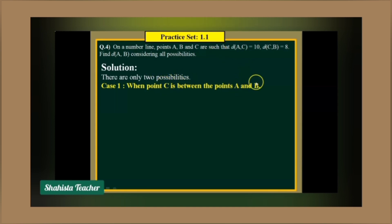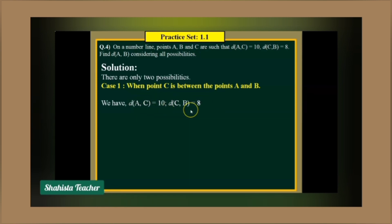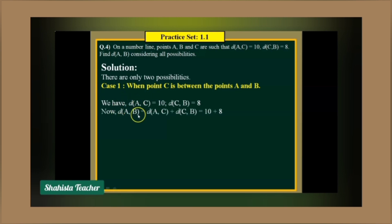For Case 1, when point C is between points A and B, we write the given values: distance of AC is 10 and distance of CB is 8. Distance of AB is equal to distance of AC plus distance of CB. So distance of AB equals 10 plus 8, which gives us 18. Therefore, distance of AB is equal to 18.